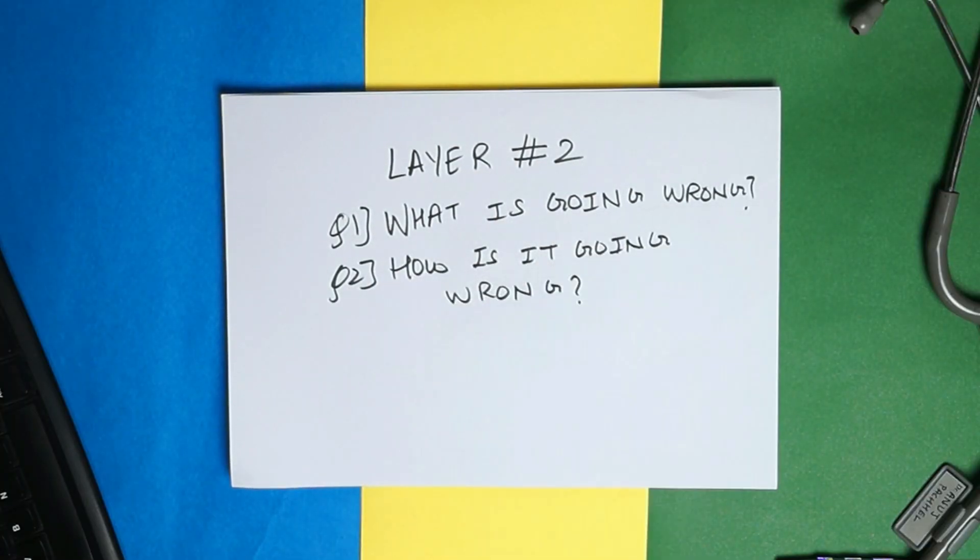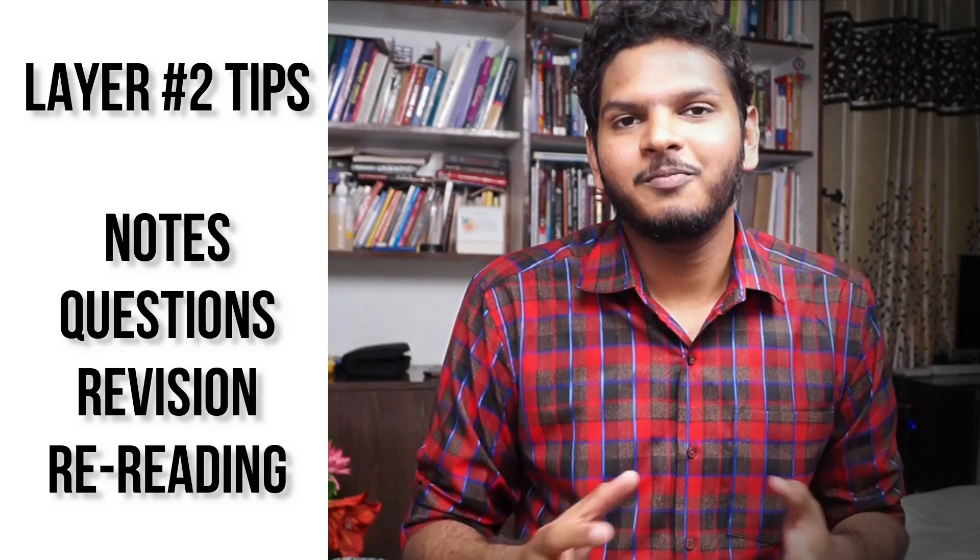Now let's move on to the second layer. The second layer is understanding what can go wrong — in medicine with arrhythmias, that means the different types, their classification, and their management. The second part is understanding what is going wrong and how it is going wrong. If you understand those two questions properly, the second layer is fulfilled. This is also the most important layer, because as future doctors you'll see patients presenting mostly in this second-layer picture — differentiating them based on their different clinical presentations. The easiest way to keep this layer updated is to make notes, make questions, and revise the same topics again and again.